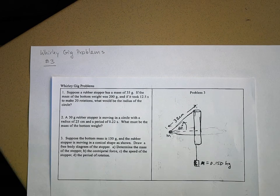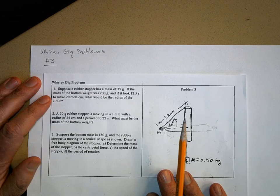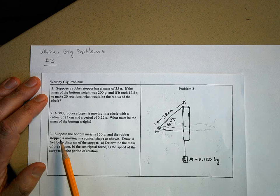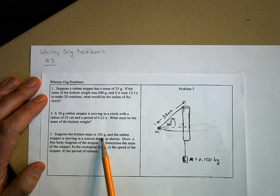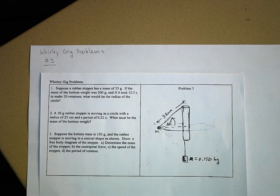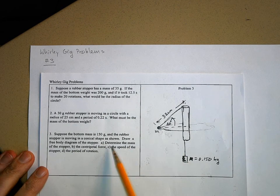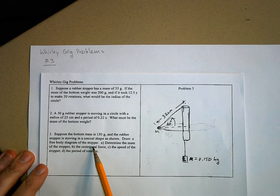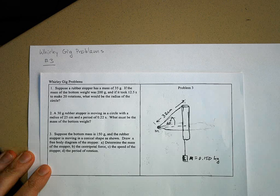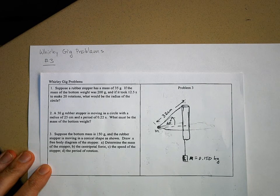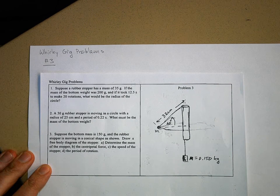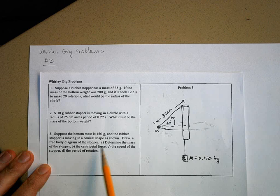All right, let's do problem number three of the whirligig problems. It says, suppose the bottom mass is 150 grams and the rubber stopper is moving in a conical shape as shown. I was looking at some of your whiteboards - I didn't see a free body diagram. Very disappointing.